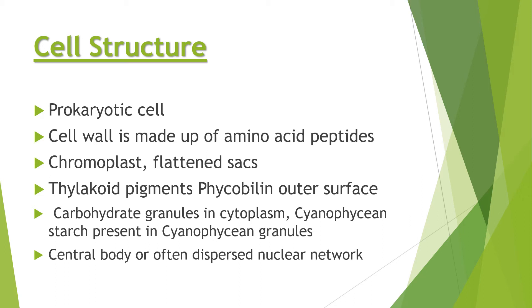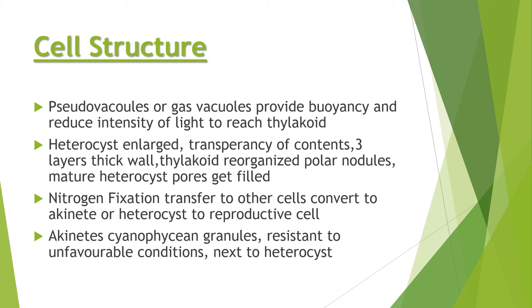Phycobilins are present on the outer surface of the thylakoids. The stacking arrangement of thylakoids into grana is absent. Carbohydrate granules present in the cytoplasm are known as cyanophycin granules — carbohydrates form starch stored in the form of cyanophycin granules. The central body contains the nuclear material but has no nuclear membrane and no nucleolus — just the nuclear material is present.